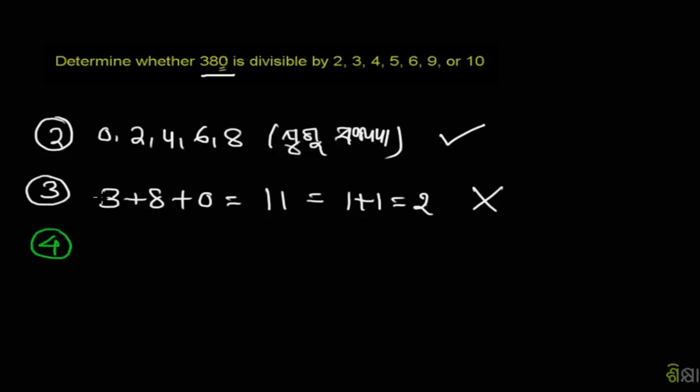Now for 4: check the last two digits. 80 divided by 4 equals 20, so 380 is divisible by 4.